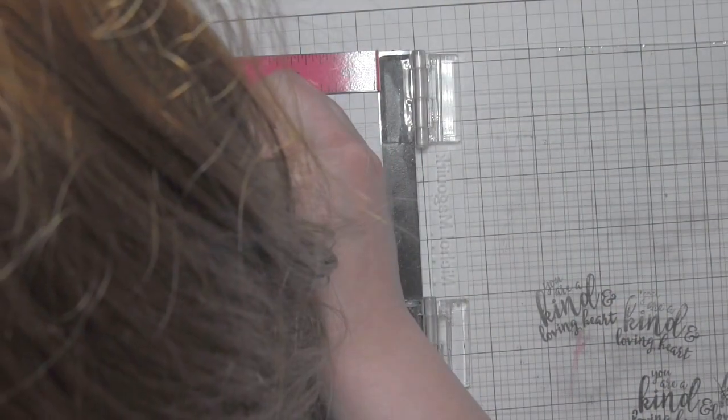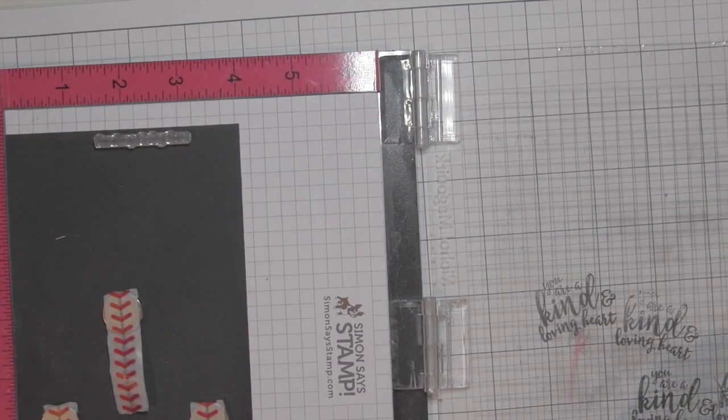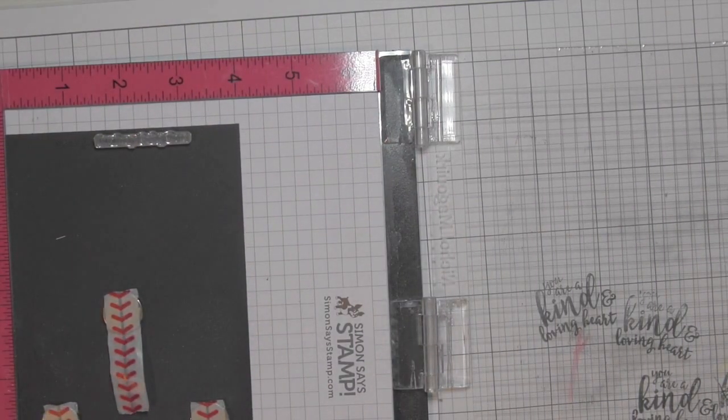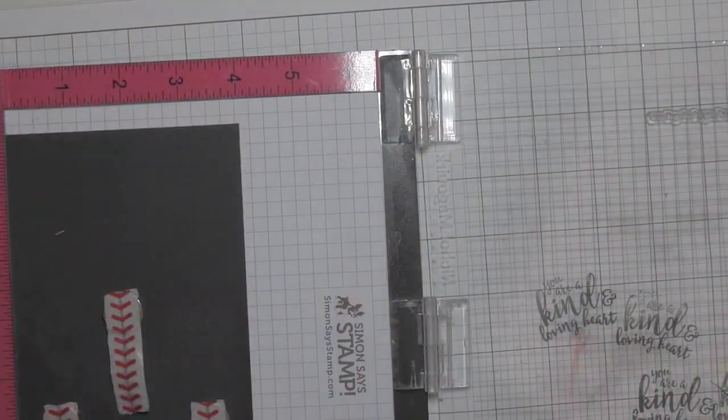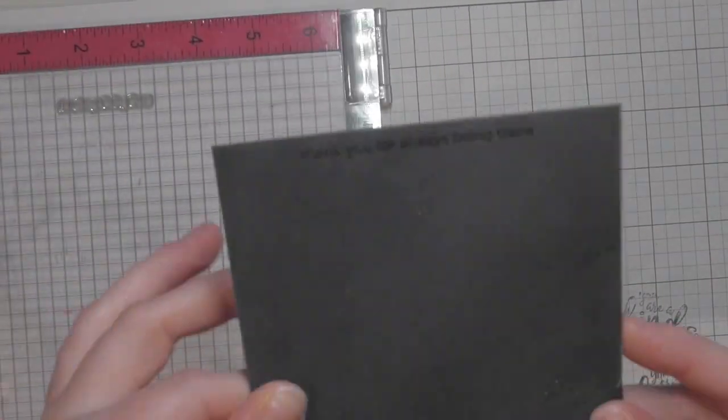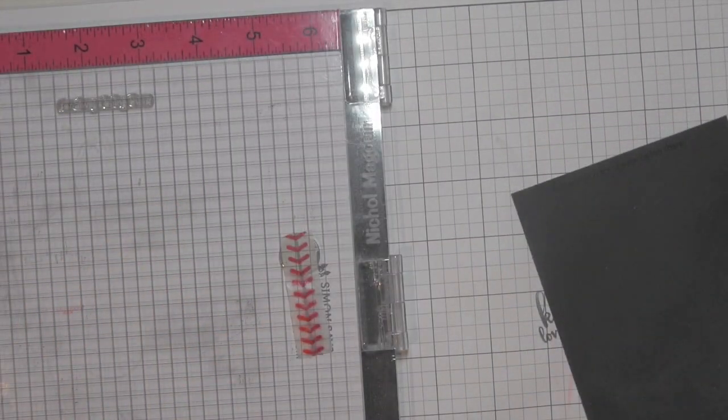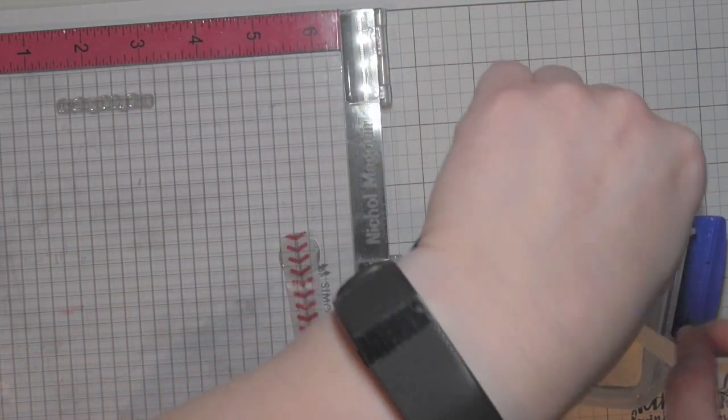I'm stamping this all with Versamark ink, and then I will heat emboss with white embossing powder to make it really pop off the black strip. This black strip is going to go all the way across the panel, but it's going to be a nice thin strip so it won't really cover up too much of the design. That way it just adds a little something to the card.